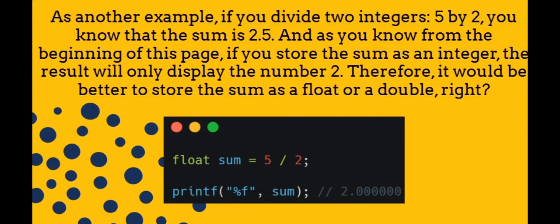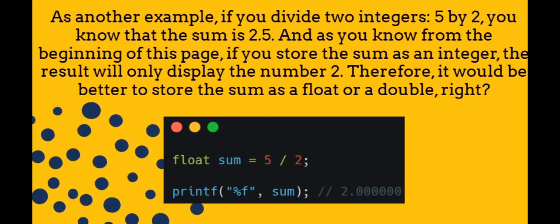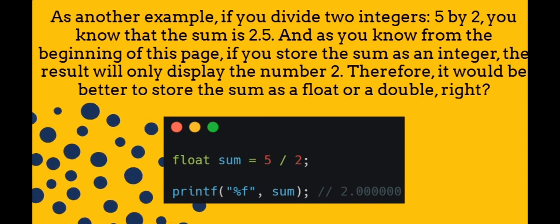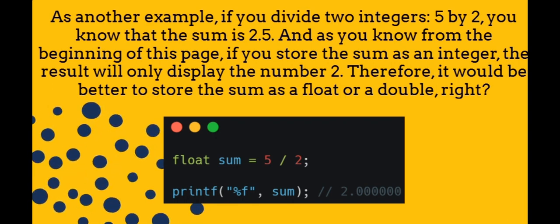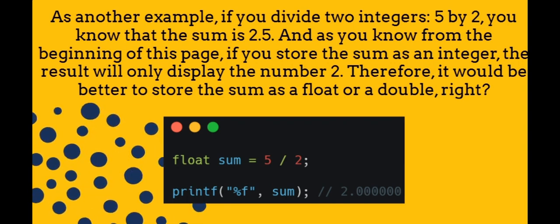As another example, if you divide two integers, 5 by 2, you know that the sum is 2.5. And as you know from the beginning of this page, if you store the sum as an integer, the result will only display the number 2. Therefore, it would be better to store the sum as a float or a double, right? Why is the result 2.0?